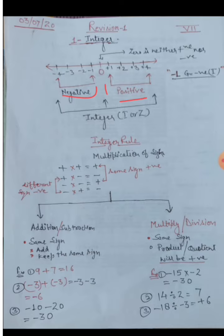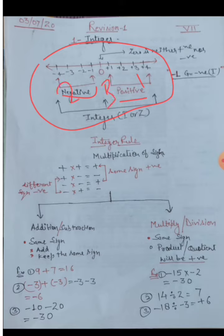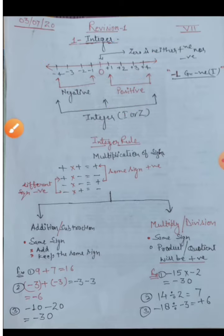In this number line, how many types of numbers do we have? Three types: one positive, second negative, and third is zero. So what is the definition of integer? All the positive numbers and all the negative numbers together with zero are called integers.